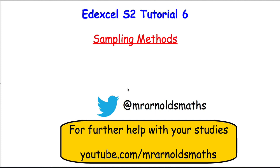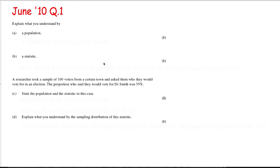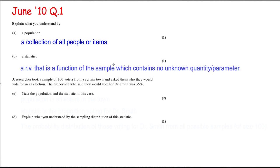First thing we're going to look at is June 2010 question 1. I'm asked to explain what I understand by a population. So a population is a collection of all individual people or items, so a collection of all people or items. And a statistic is a random variable that's a function of the sample which contains no known parameters.